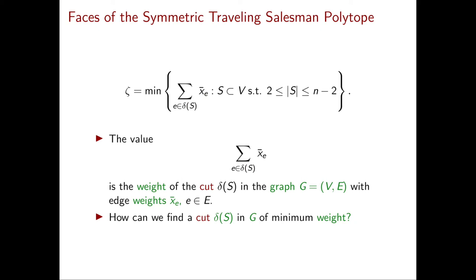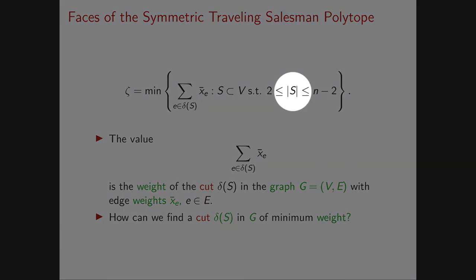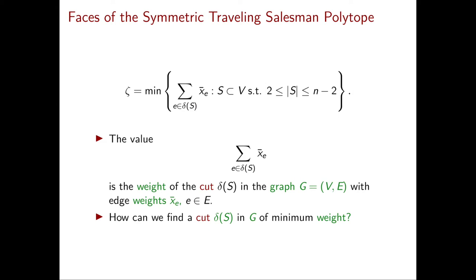There is a small detail: among our constraints the set S has cardinality between 2 and n-2, while in general a cut could have |S| equal to 1 or n-1. However, this doesn't matter here because if |S| is 1 or n-1, the sum of x̄_e over delta(S) is guaranteed to equal 2 due to our degree constraints. Therefore the optimal value of this problem is strictly smaller than 2 if and only if the minimum weight cut in G has value strictly smaller than 2.